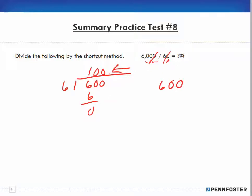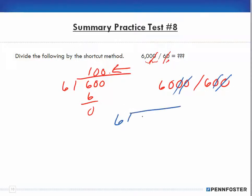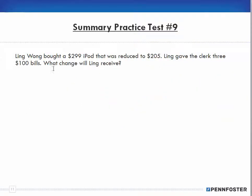For example, if the problem were 6,000 divided by 600, since there are two zeros, I'd drop off two zeros from each and divide 6 into 60 to get 10. The shortcut method lets us drop off those trailing zeros, saving us from writing unnecessary zeros and avoiding errors. On to practice test number nine.